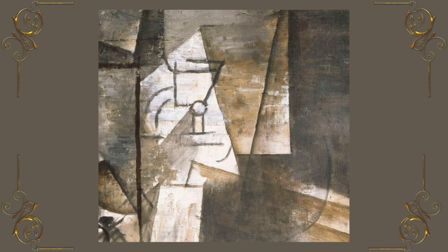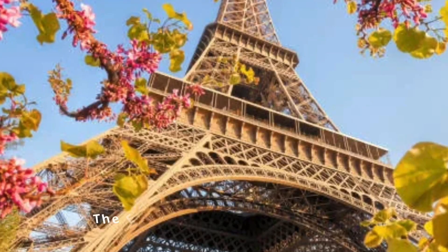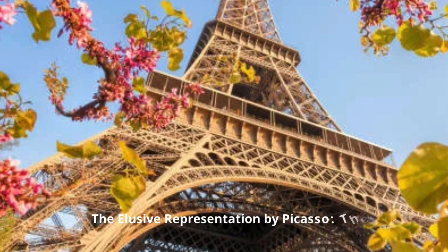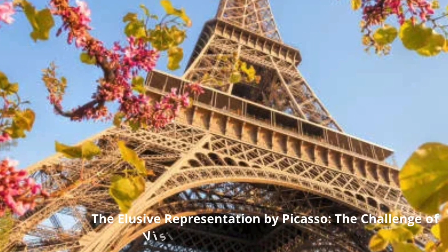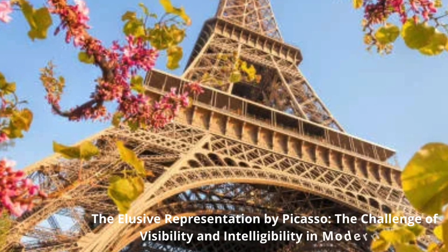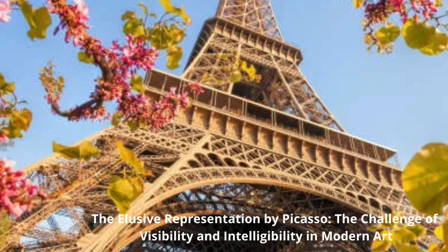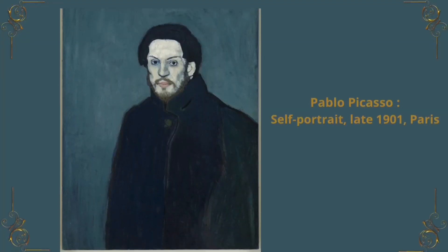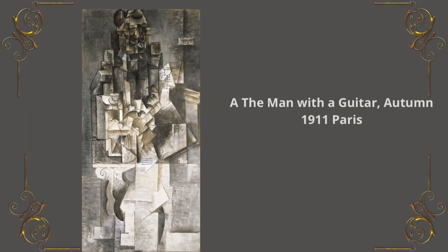In his analysis, Picasso deconstructs each element separately, leading him to fragment reality. He incorporates both subject and background into a unified network of geometric lines and abandons color, finding it too emotional. However, this analytical Cubism of the 1910–1911 years risks making the artwork indecipherable, as the geometrization threatens to turn into abstraction.